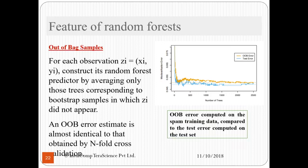Features of random forests is our next topic. Out-of-bag samples: for each observation zi equals (xi, yi), construct its random forest predictor by averaging only those trees corresponding to bootstrap samples in which zi did not appear. The following graph shows the number of trees versus the misclassification error. We can see that this drops as the number of trees increases, and it then steadies out and the increase in number of trees does not help the output.